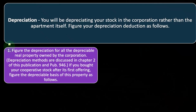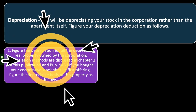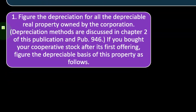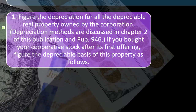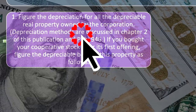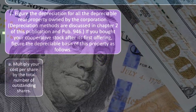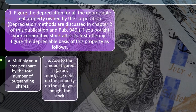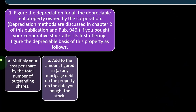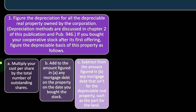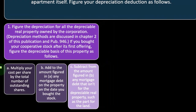To figure your depreciation deduction: first, figure the depreciation for all the depreciable real property owned by the corporation as a full unit, then determine your share. If you bought your cooperative stock after its first offering, figure the depreciation basis as follows: (a) multiply your cost per share by the total number of outstanding shares; (b) add any mortgage debt on the property on the date you bought the stock; (c) subtract any mortgage debt that isn't for depreciable real property, such as the portion for land.